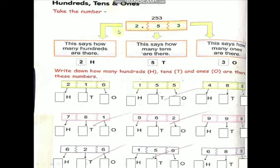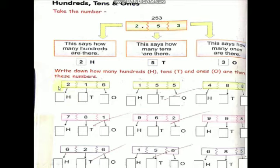Come to the next page — hundreds, tens, and ones. See children, take the number 253. The digit 2 tells how many hundreds there are; 5 tells how many tens; and 3 tells how many ones. Place value: 3 is in the ones place, 5 is in the tens place, 2 is in the hundreds place. You have to write hundreds, tens, ones. For 216: 2 is in the hundreds place, 1 is in the tens place, 6 is in the ones place. For 155: 1 is in the hundreds place, 5 in tens, 5 in ones.